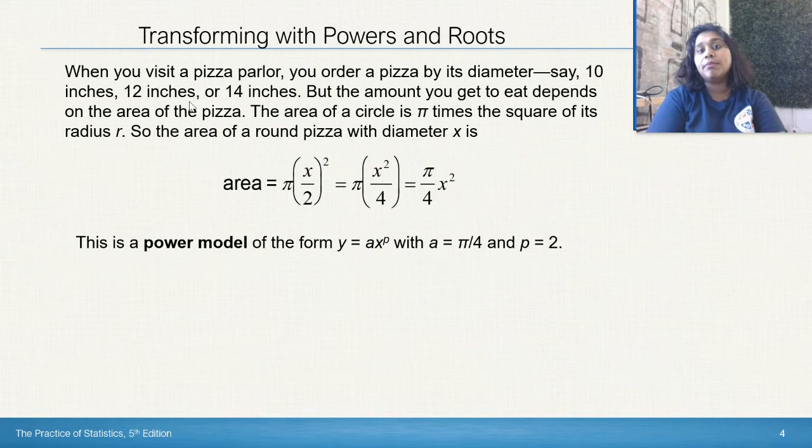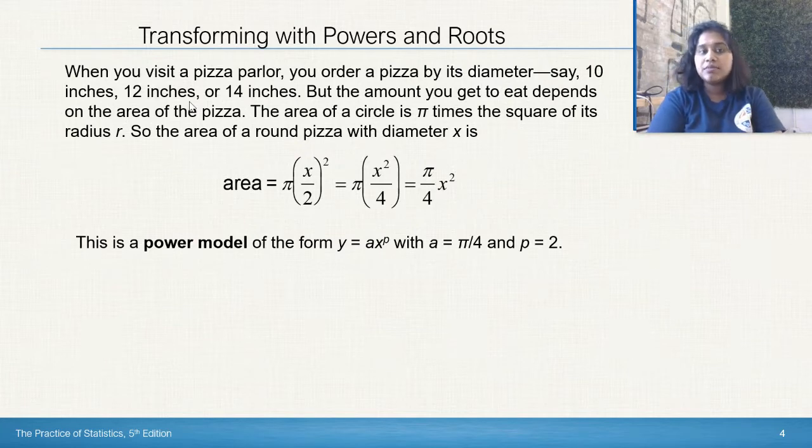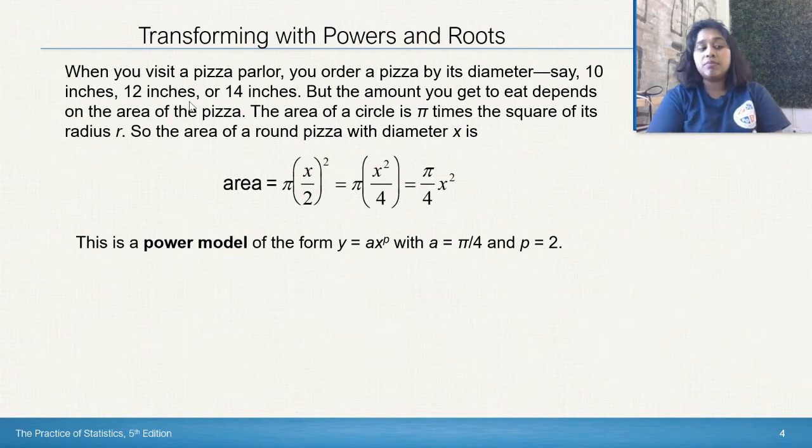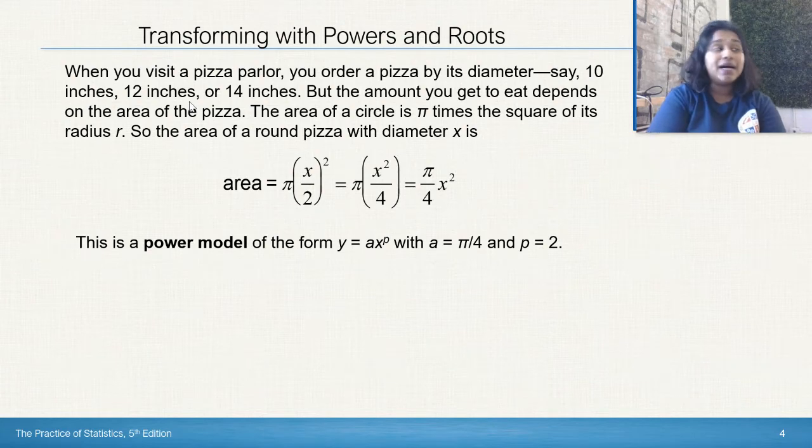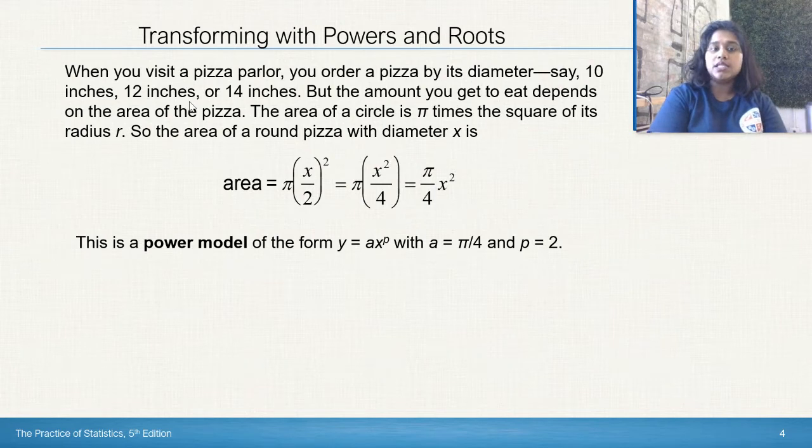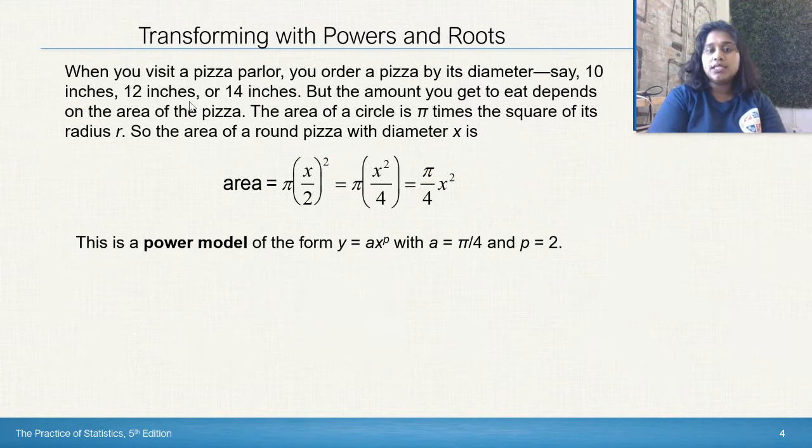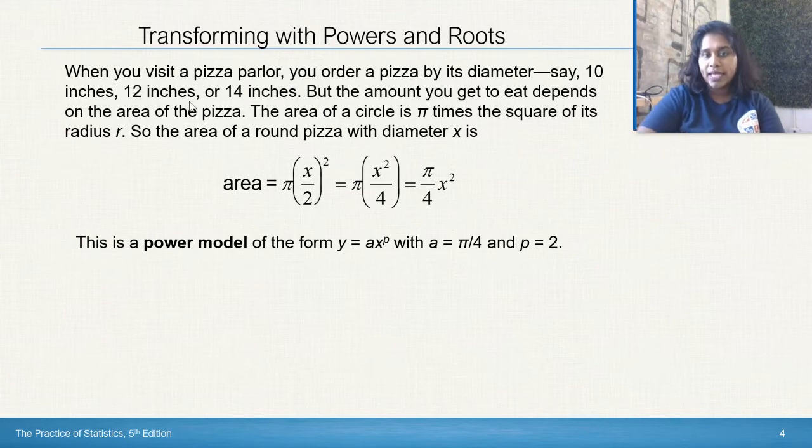Transforming with powers and roots. When you visit a pizza parlor, you order a pizza by its diameter, say 10 inches, 12 inches, or 14 inches. But the amount you eat depends on the area of the pizza. The area of the circle is pi times the square of its radius, pi r squared. So the area of a round pizza with diameter x is given by pi times x over 2 squared, or pi x squared over 4. This is the power model of the form y equals a times x raised to the p power, where a equals pi over 4, and p is simply your value 2. It's part of that power model, a x to the p.